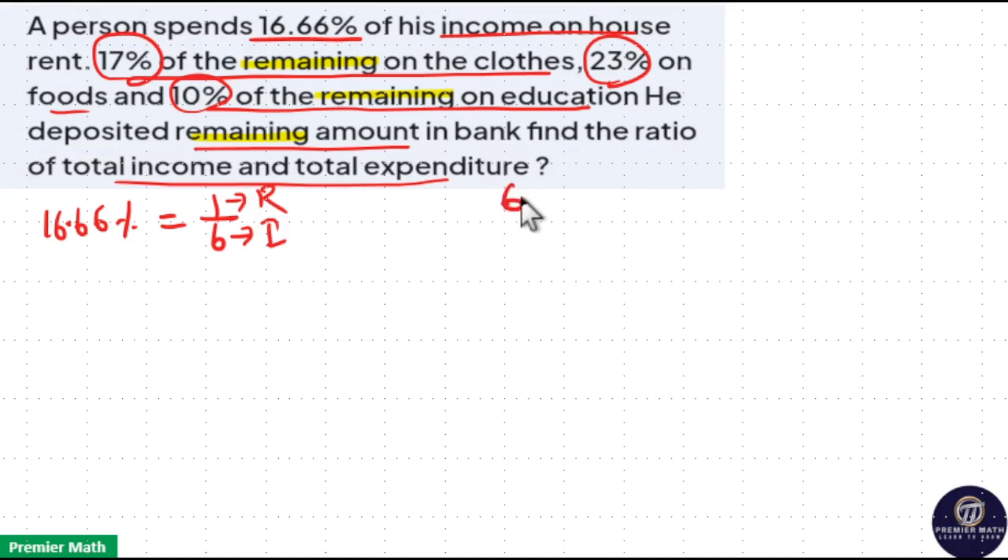Now if you consider 600, 6 parts means 600 as total income. 1 by 6 of 600 is 100 rupees he spent on rent. Remaining is 500 rupees.